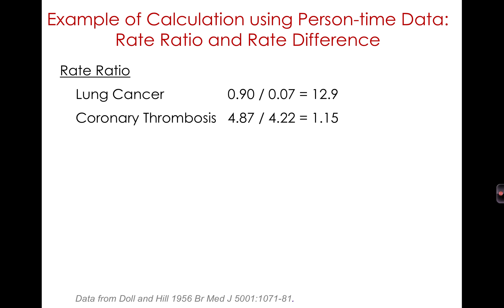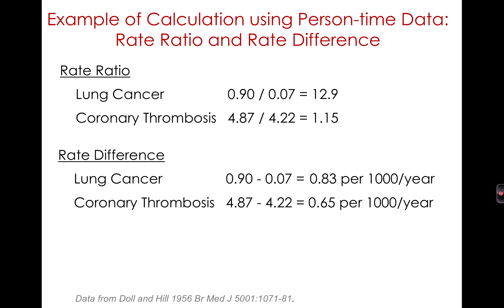For lung cancer: 0.9 deaths per 1,000 per year among smokers divided by 0.07 among nonsmokers gives a rate ratio of 12.9. For coronary thrombosis: 4.87 divided by 4.22 gives a ratio of 1.15. We can also calculate the rate difference: the rate difference for lung cancer is 0.83 per 1,000 per year, and for coronary thrombosis it is 0.65 per 1,000 per year.